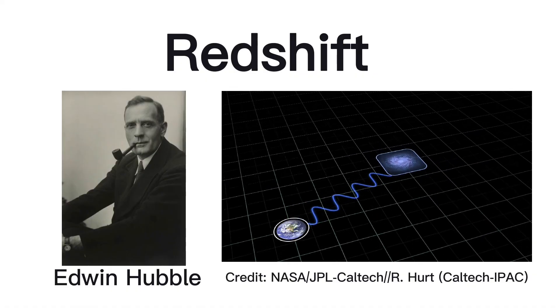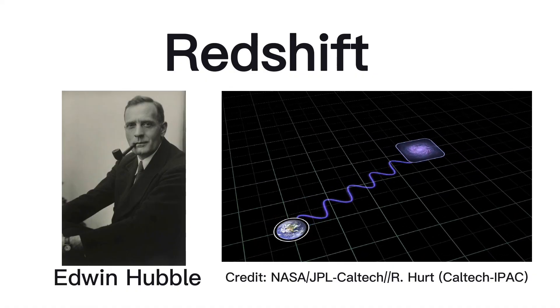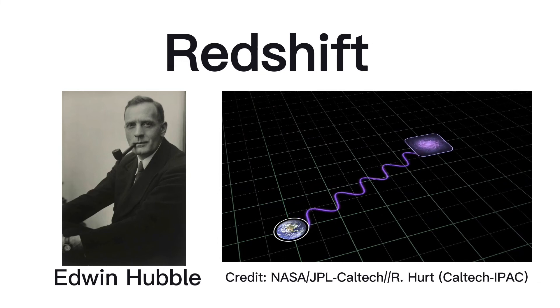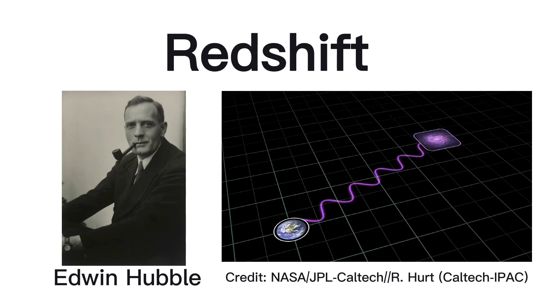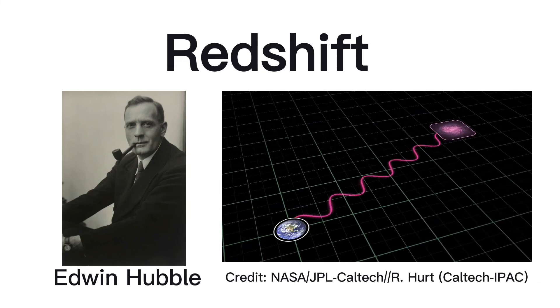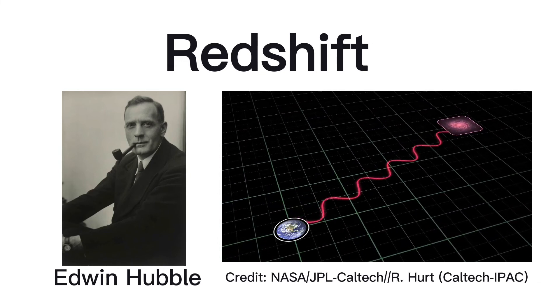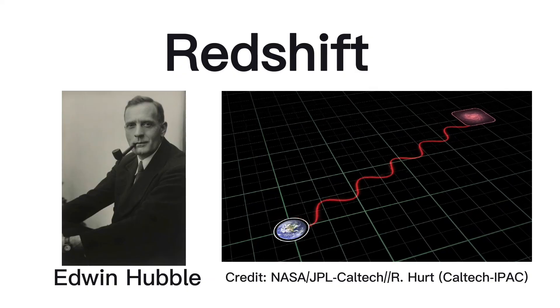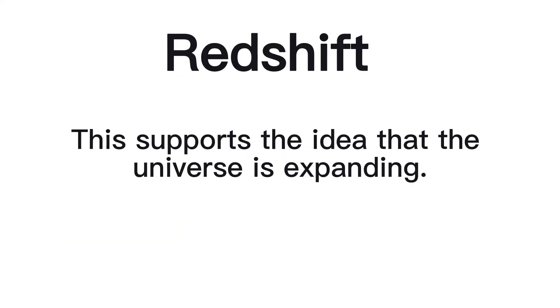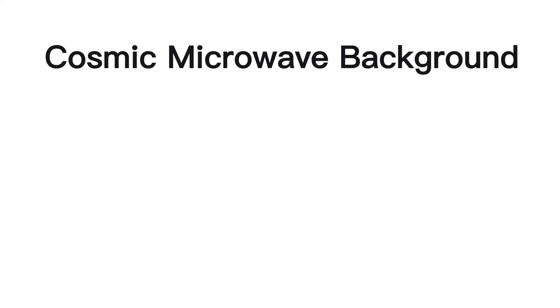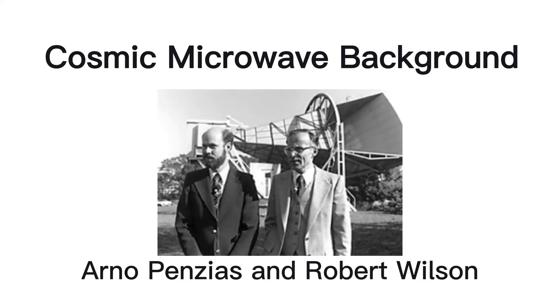Edwin Hubble observed that most galaxies have spectral shifts that move towards the red end of the spectrum — this is called redshift. Redshift is an example of the Doppler effect. As a certain object moves away from us, the light waves emitted by it are stretched, moving towards the red end of the spectrum. This discovery indicates that the universe is actually expanding.